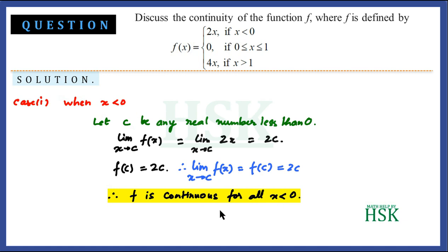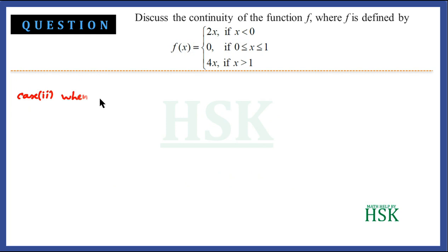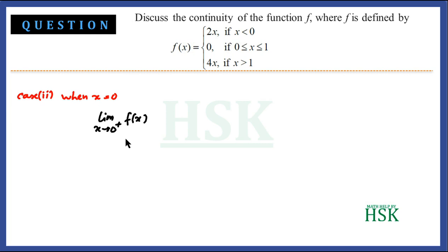Therefore f is continuous for all x < 0. Now for the second case, x = 0: the function changes value at this point, so we check continuity here by computing the left-hand limit and right-hand limit. The right-hand limit is the limit of f(x) as x tends to 0 from the positive side.